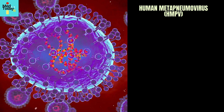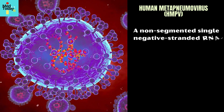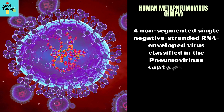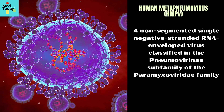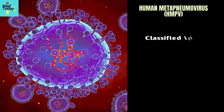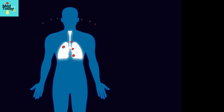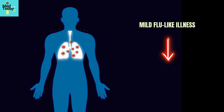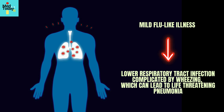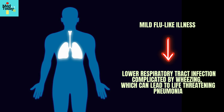Human metapneumovirus is a non-segmented, single-negative-stranded RNA enveloped virus classified in the Pneumovirinae subfamily of the Paramyxoviridae family. The infection can range from a mild flu-like illness to a lower respiratory tract infection complicated by wheezing, which can lead to life-threatening pneumonia.